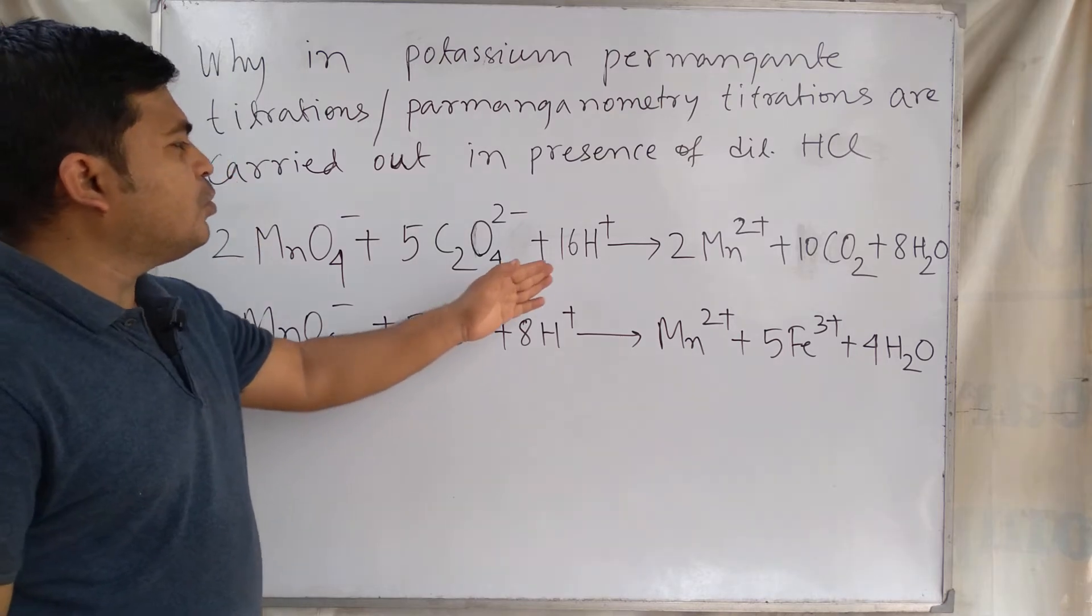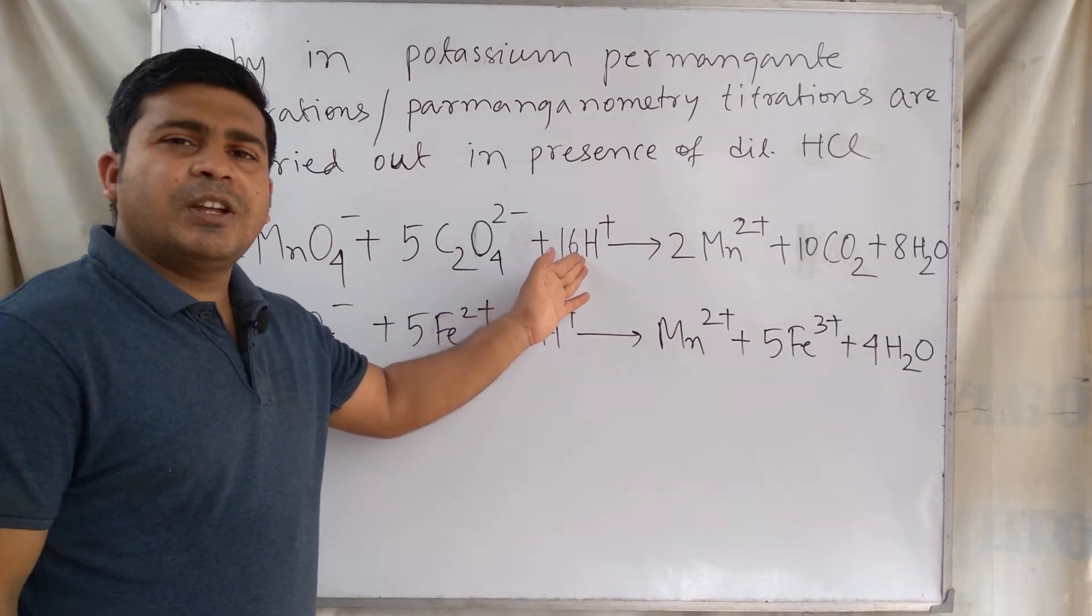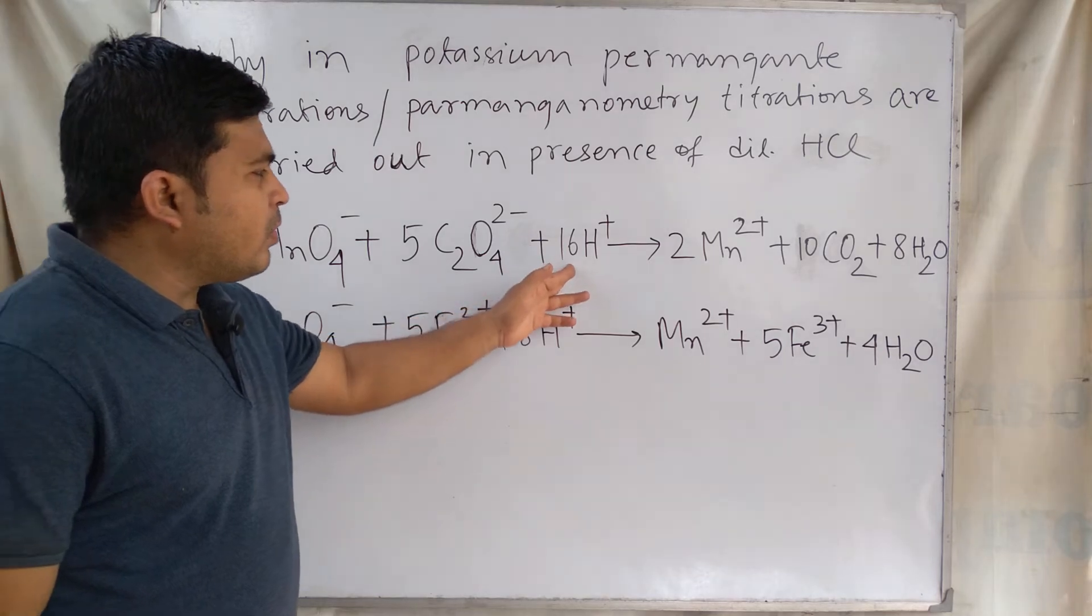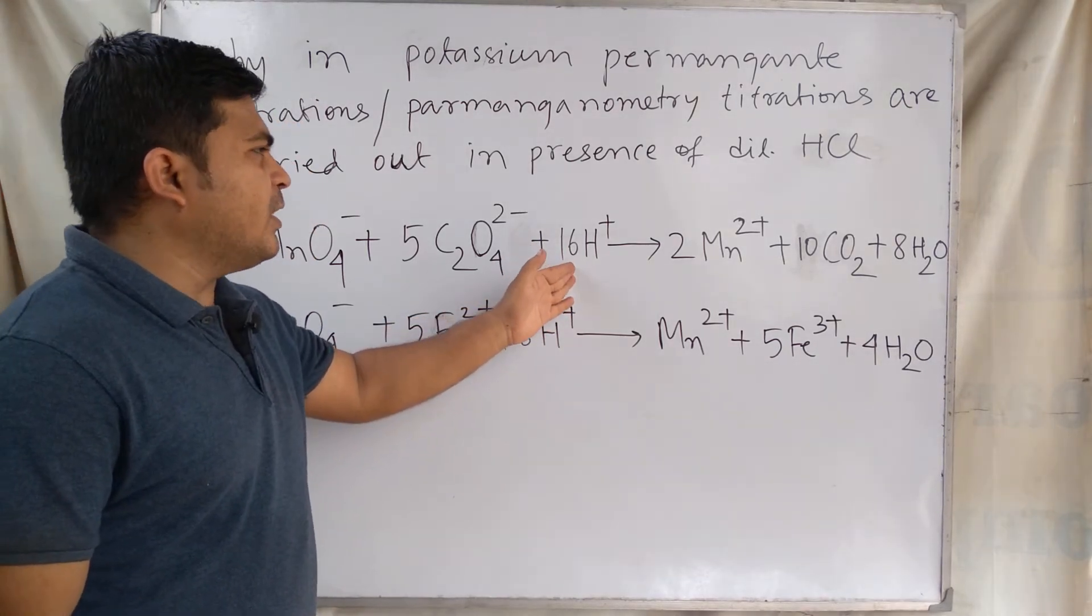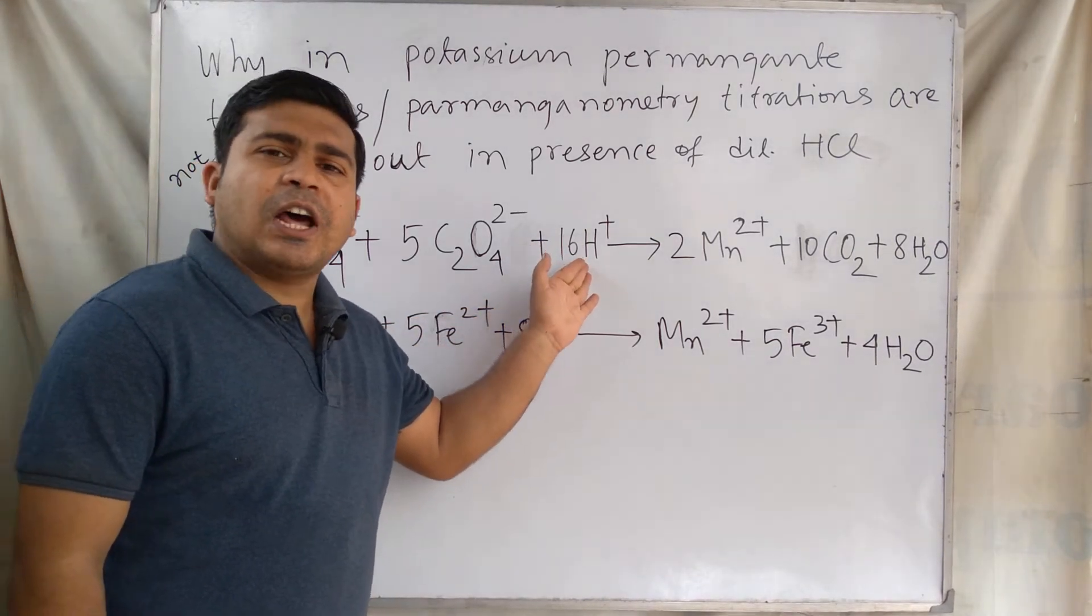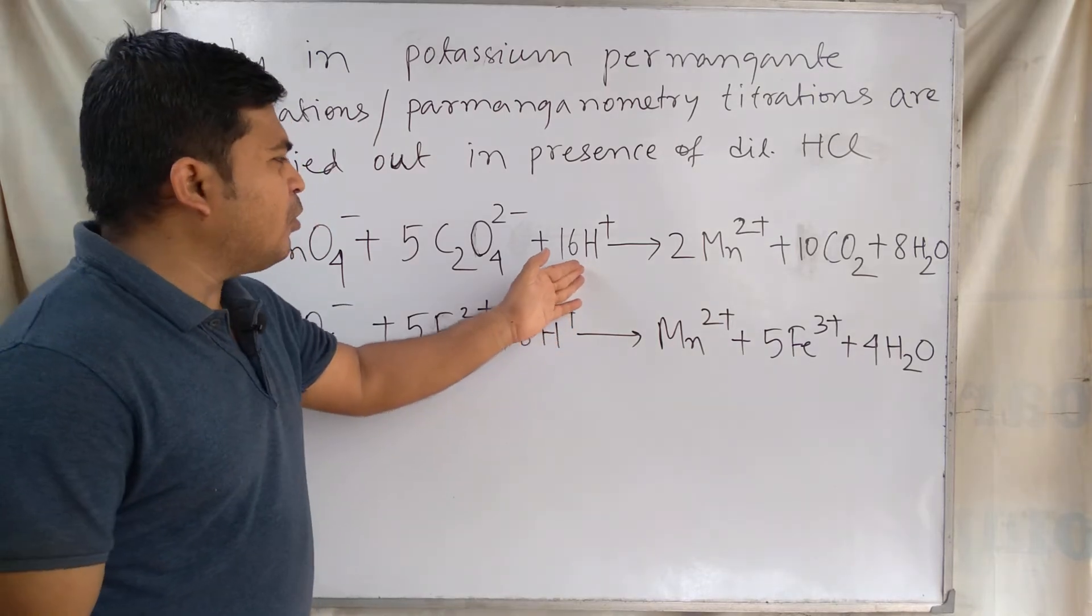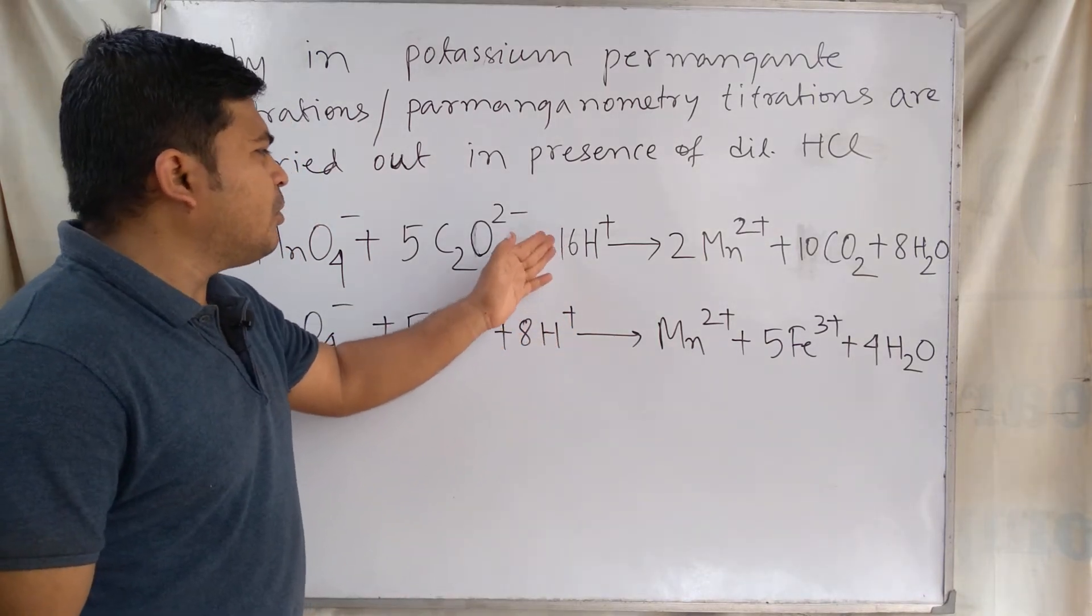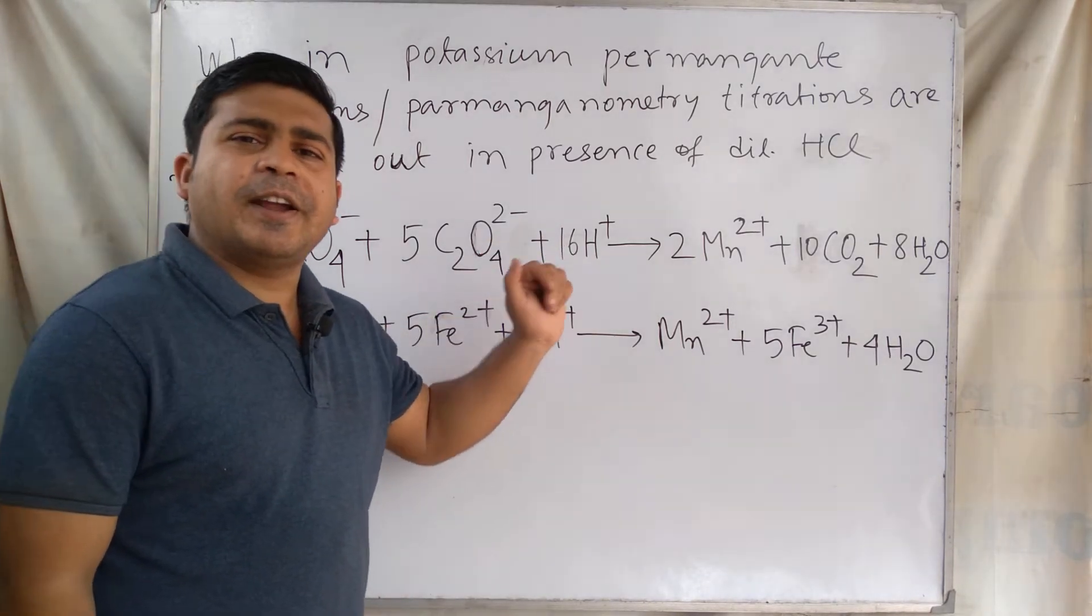Here we use acidic medium for the titrations, and in place of acid we use dilute sulfuric acid. Dilute sulfuric acid is used in potassium permanganate titrations.